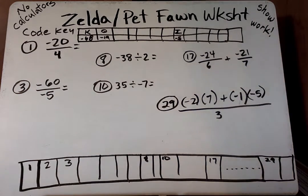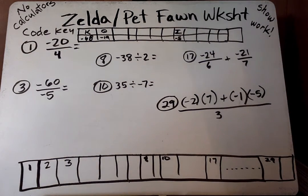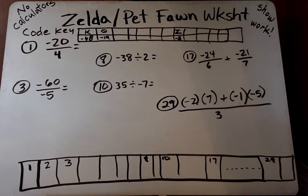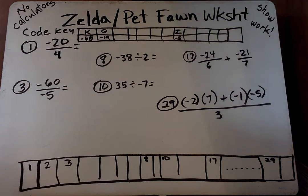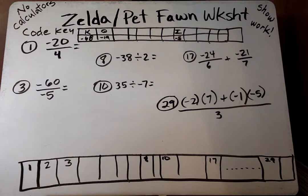Hello students, today we are going to be going over the worksheet, Why did Zelda name her pet fawn 99 cents? So it says under the instructions, do each exercise below and find your answer in the code key. Notice the letter above it, print this letter in the box at the bottom of the page that contains the number of the exercise.